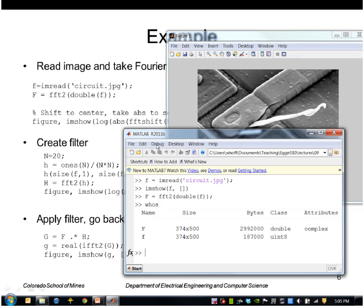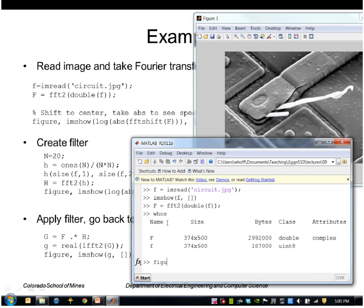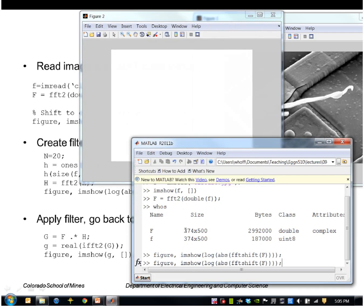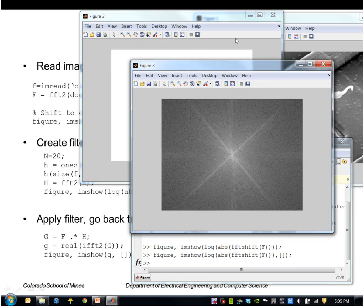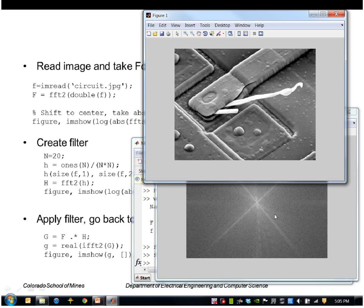Let's go ahead and view that just for visualization. We'll take the log to enhance small values and take the absolute value of those complex numbers, then shift the transform so that the zero frequency is in the middle. That is the Fourier transform of this circuit image here.